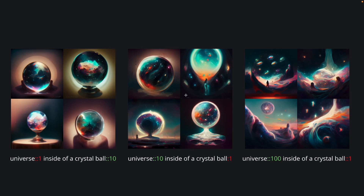In comparison, our second grid image where we reversed the text weights already displays a significant change in composition. The universe is still present inside the form of a crystal bowl, but the crystal bowl is not obvious as a standalone object anymore — it's only a somewhat vague depiction. The universe is breaking out of the crystal bowl confines and starting to impact the entire composition, as the background is no longer plain but instead creates a universe-inspired environment. I think these two examples depict well how text weights impact image composition.